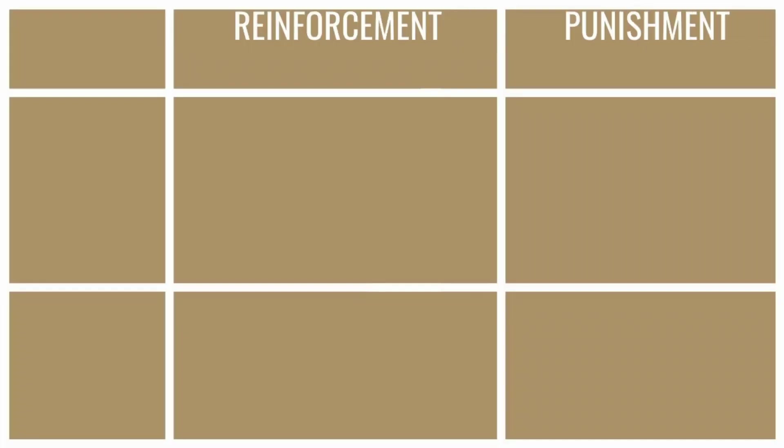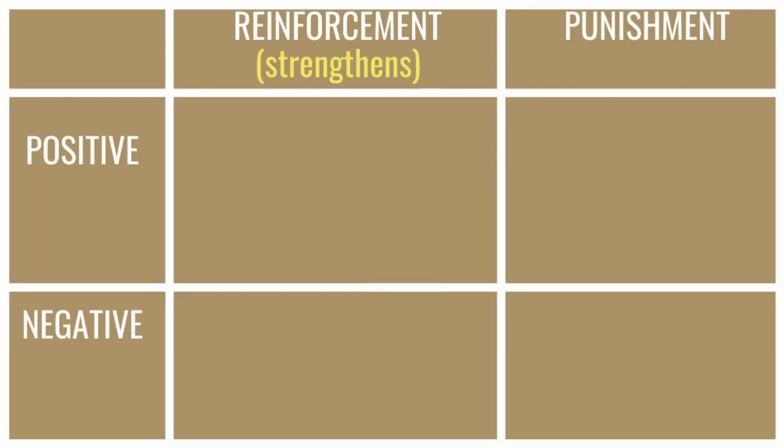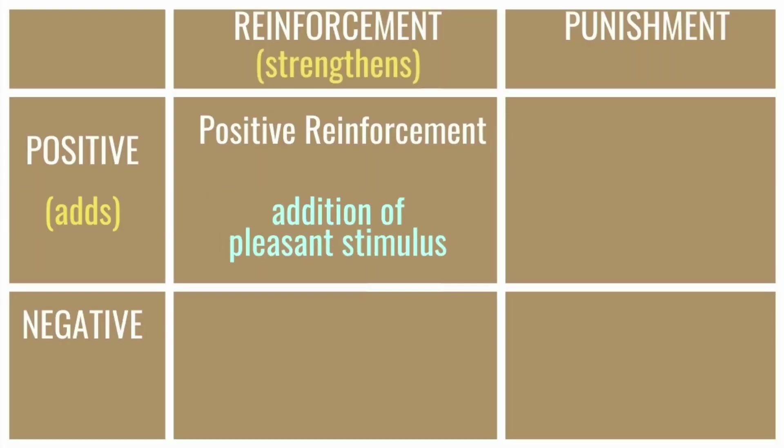Operant conditioning can be divided into two categories: reinforcement and punishment, each further divided into positive and negative. Reinforcement is defined as anything that strengthens or increases the likelihood that a response will occur again — reinforcement equals strength. Positive reinforcement strengthens the response by adding a pleasurable consequence.